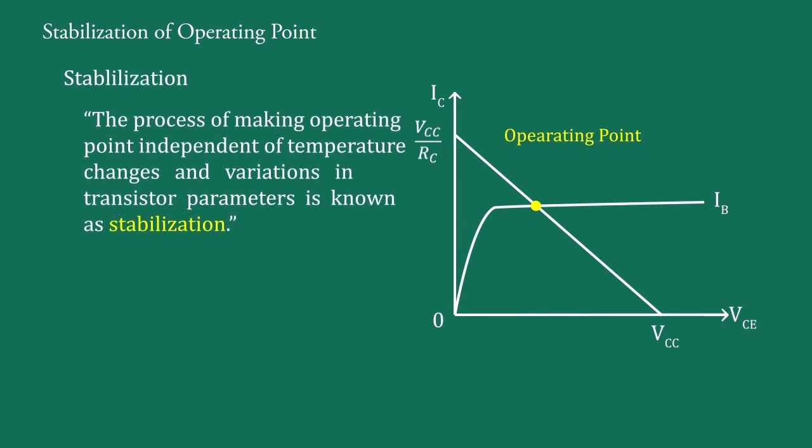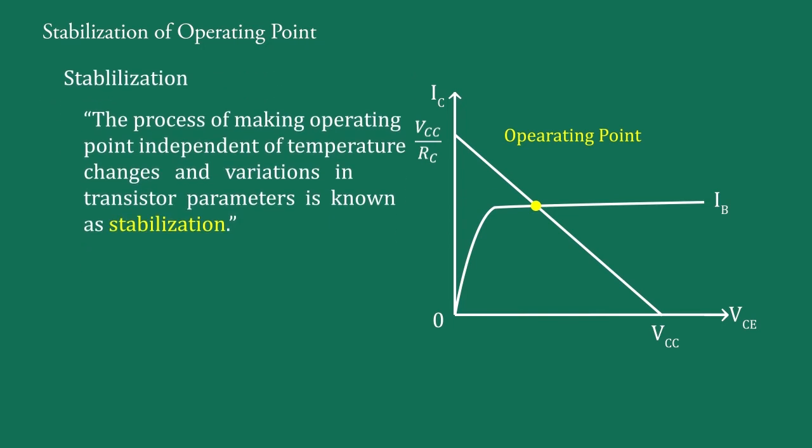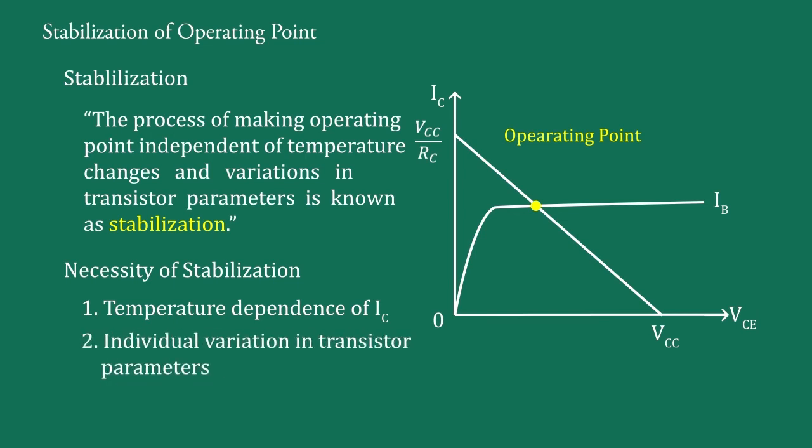A good biasing circuit always ensures the stabilization of operating point. For any amplifier, stabilization of the operating point is necessary due to three reasons: temperature dependence of IC, individual variations in transistor parameters, and thermal runaway.